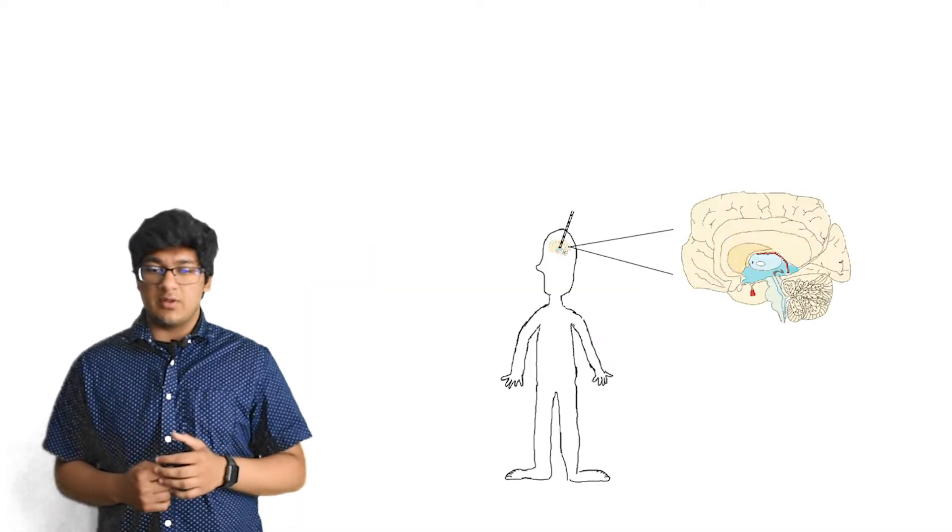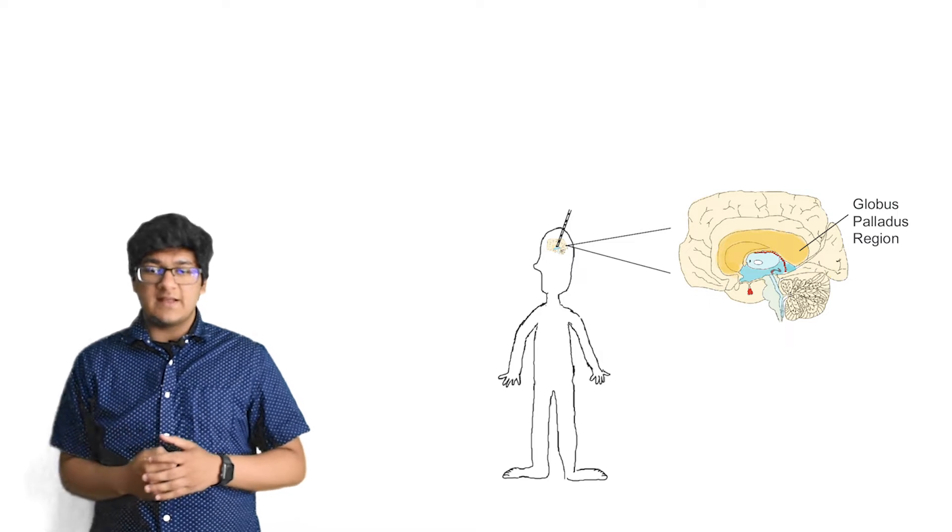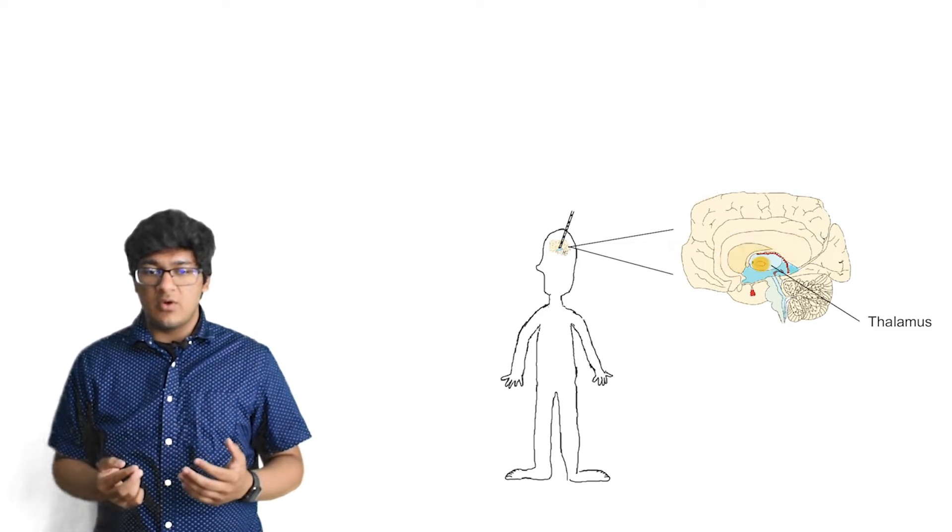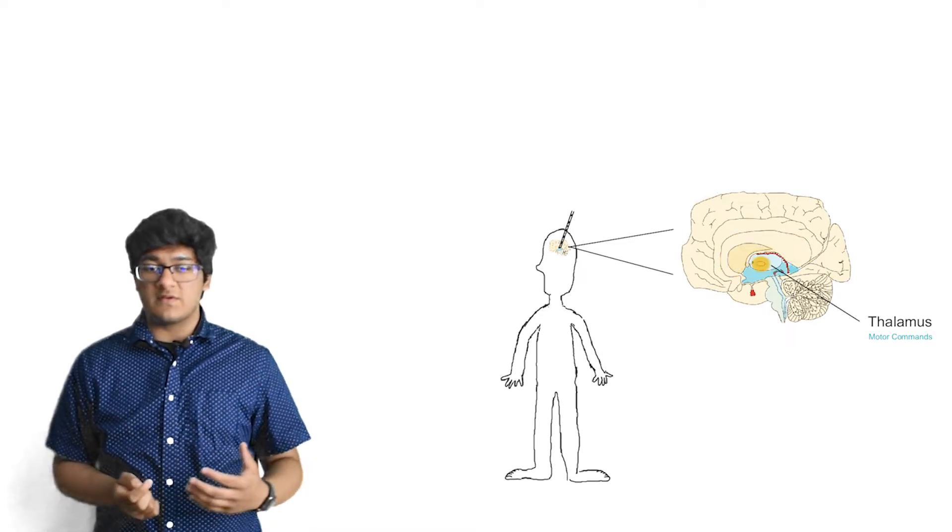Neurosurgeons insert an electrode into the globus pallidus region deep in the brain, because that leads directly to the thalamus, which is responsible for sending motor signals to the rest of the body.